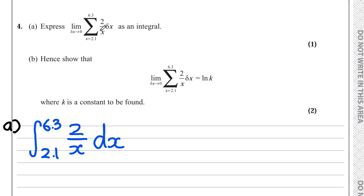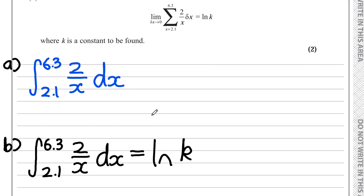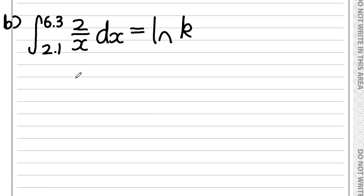For part b, we need to show that this sigma from part a is equal to the natural log of k, where k is a constant to be found, for two marks. Since in part a we showed the sigma can be written as the integral between 6.3 and 2.1 of 2 over x, this question is essentially asking us to show that integral equals the natural log of k.